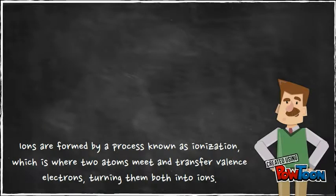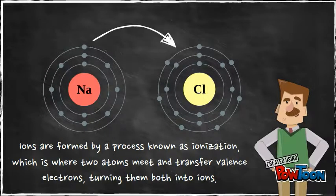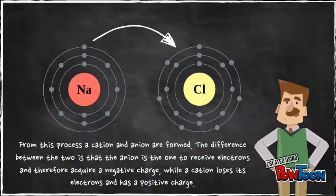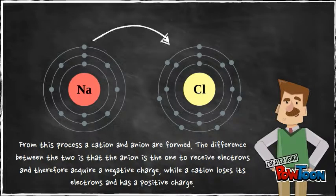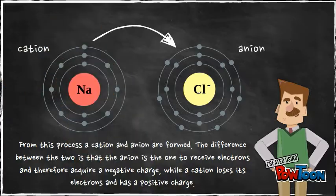Ions are formed by a process known as ionization, which is where two atoms meet and transfer valence electrons, turning them both into ions. From this process, a cation and an anion are formed. The difference between the two is that the anion receives electrons and therefore acquires a negative charge, while the cation loses electrons and has a positive charge.